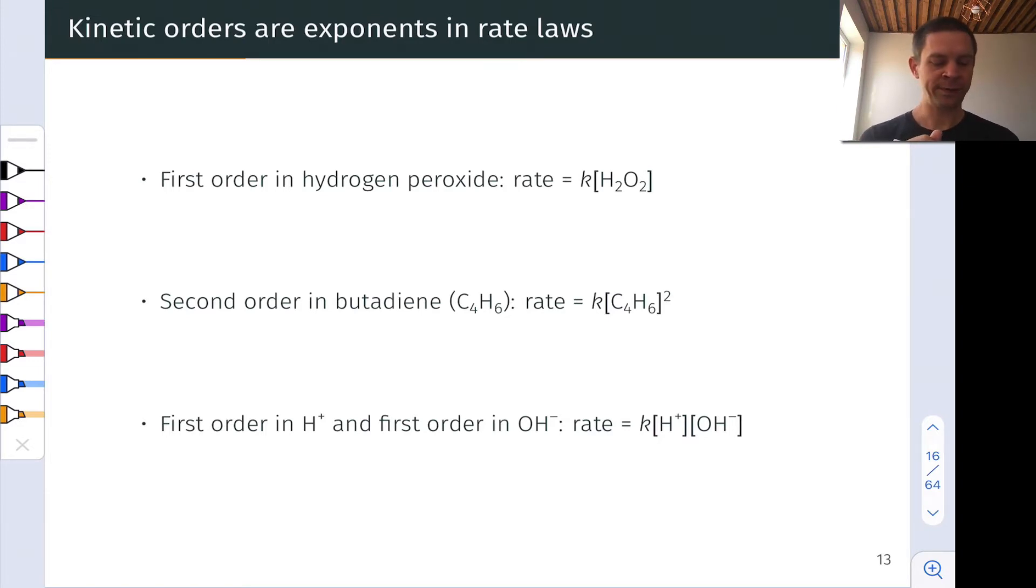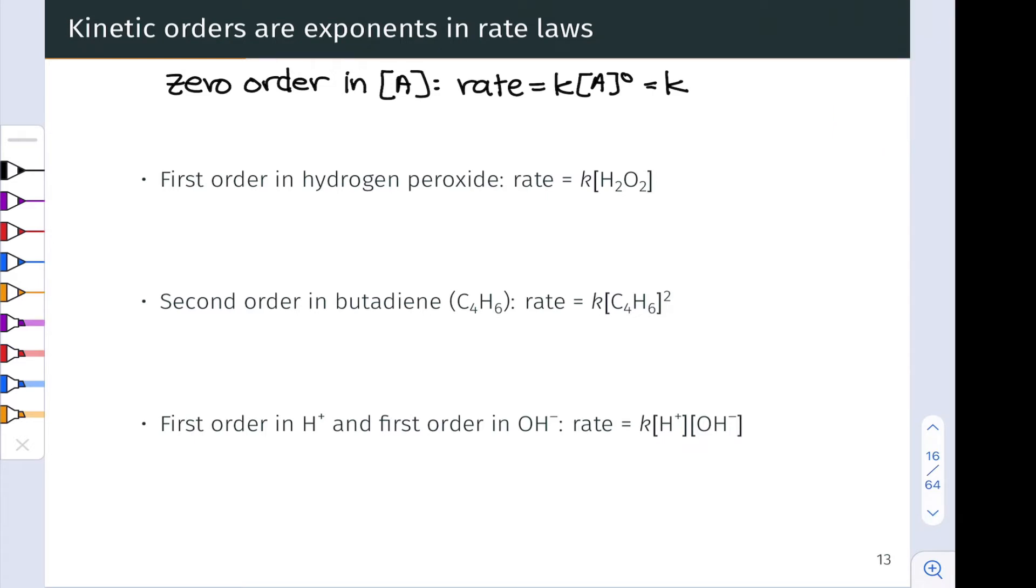And let's start with the interesting case of zero order, which is absolutely a possibility. Zero order in a reactant means the exponent on that concentration term is zero. This means the rate equals k times the concentration of A to the zero power, or rate equals k.